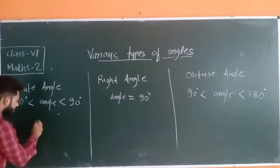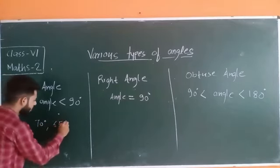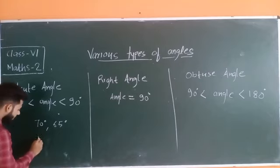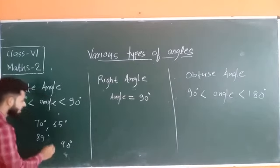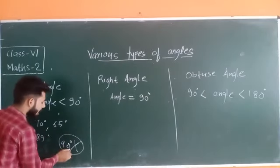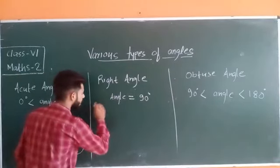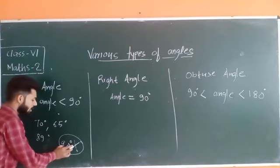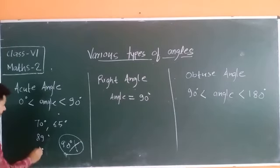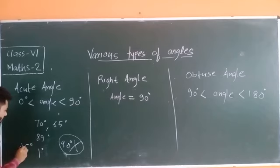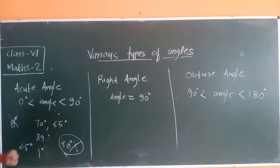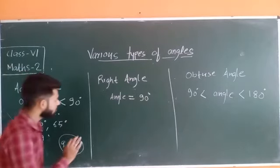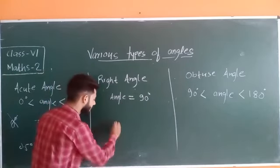If the angle measure is 70 degrees, it will be an acute angle. If 65 degrees, it will be an acute angle. Even 89 degrees is an acute angle. But if it becomes 90 degrees, it is not an acute angle. Also, 1 degree or 0.5 degree are also acute angles, but 0 degrees is not. Always remember: the angle measure should be greater than 0° and less than 90°.